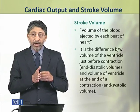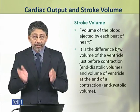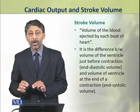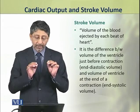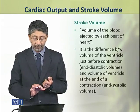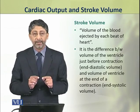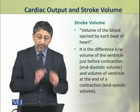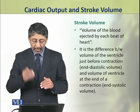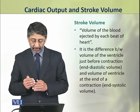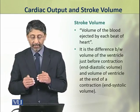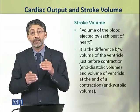In comparison to cardiac output, stroke volume is the volume of blood which is ejected from the heart by each beat of the heart. It is the difference between the volume of the ventricle just before contraction — which means end diastolic volume — and the volume of the ventricle at the end of a contraction, which means end systolic volume.